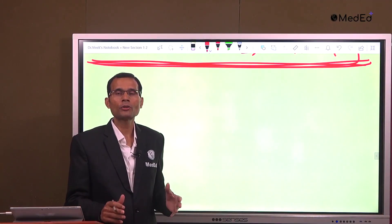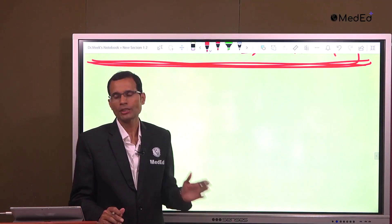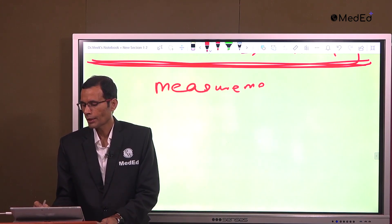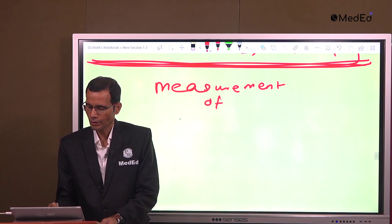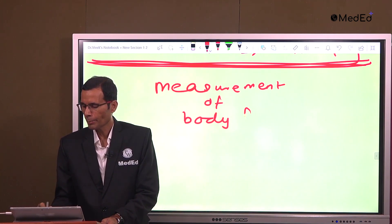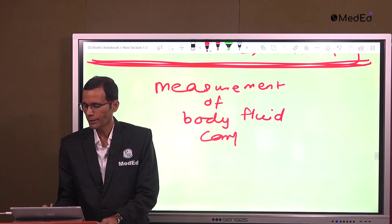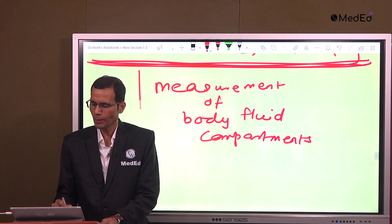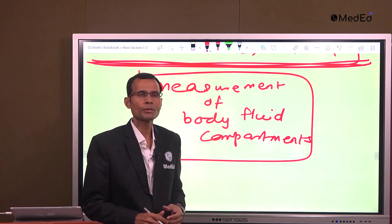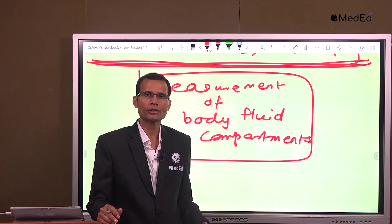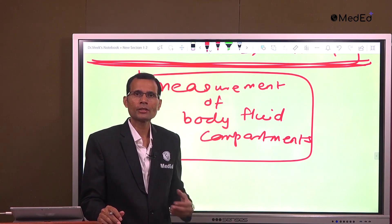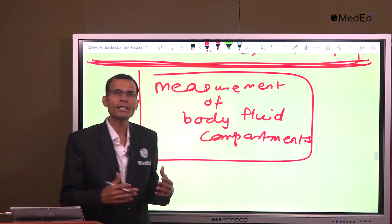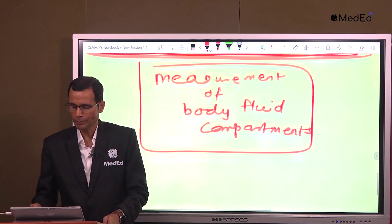Now let us talk about measurement of the body fluid compartments. We need to measure these body fluid compartments because a patient suffering from dehydration or a patient suffering from loss of intracellular fluid volume — all these things are possible, and therefore measurement of the body fluid compartments is important.